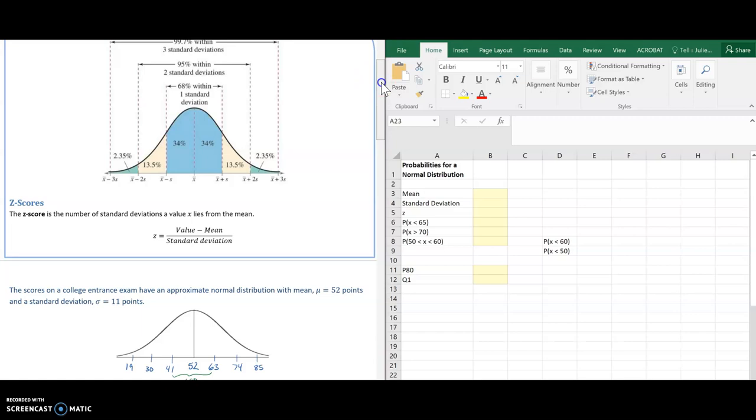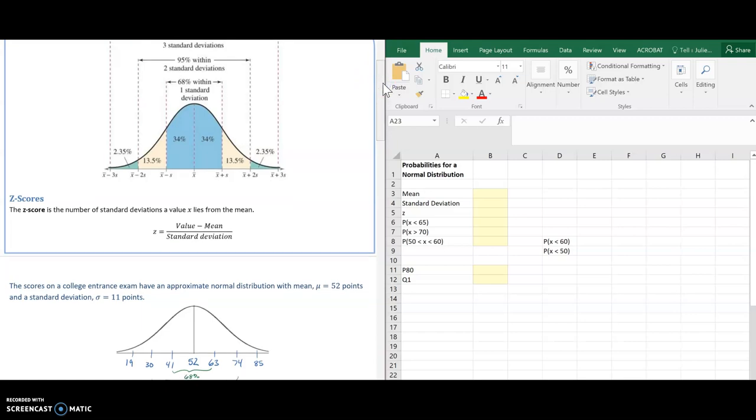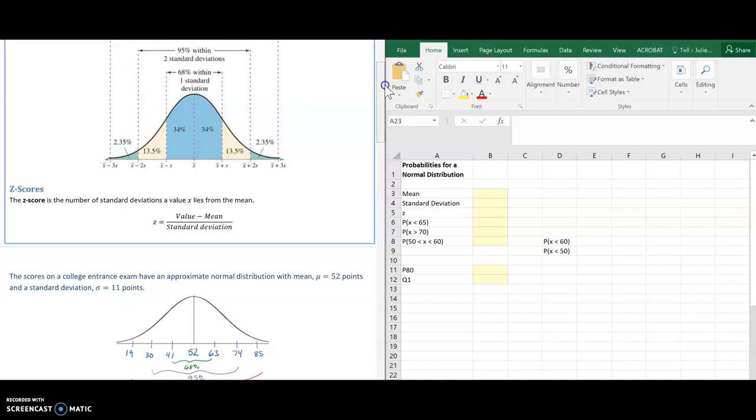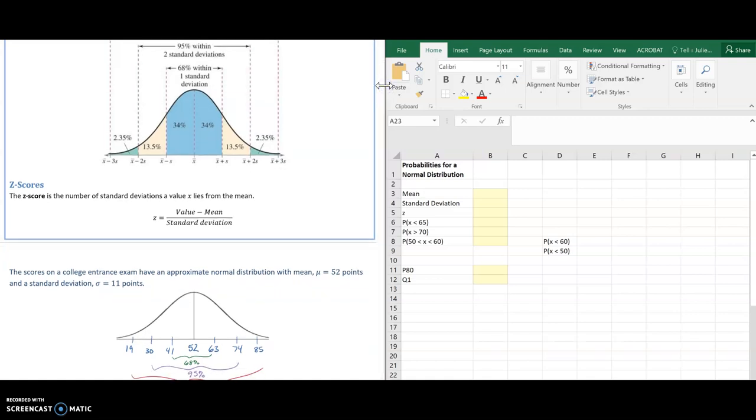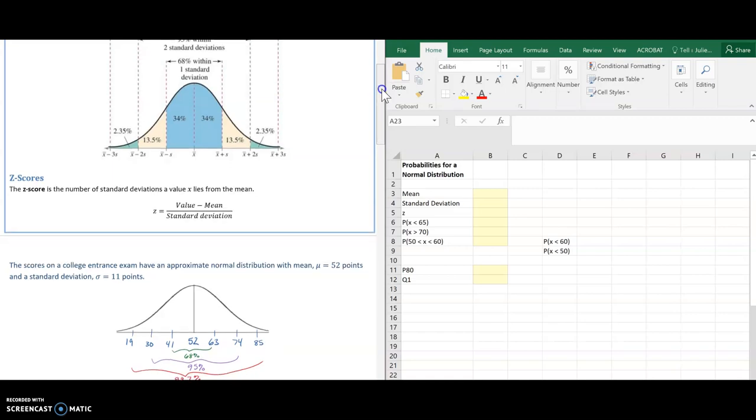So what that tells me using the empirical rule is that 68% of my data is between 41 and 63, 95% of my data is between 30 and 74, and 99.7% of my data is between 19 and 85.